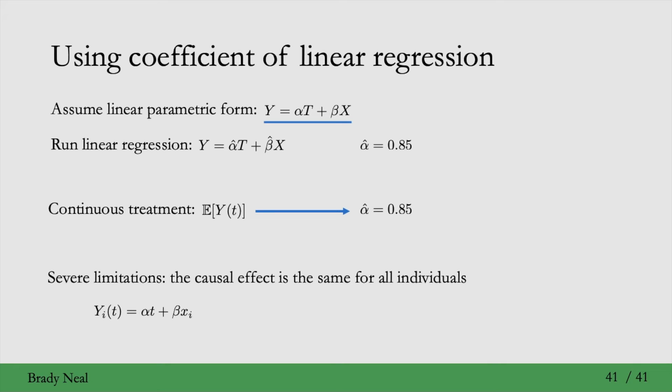Then if we take the unit-level causal effect, we can write it as follows where the minus alpha times zero term is just zero and then the beta terms cancel and we just get alpha. So this, importantly, does not depend on Xi, which means that the unit-level causal effect is the same no matter what Xi is. It's the same for all individuals. It's always alpha. And this is implied by this linear parametric form that we assumed.